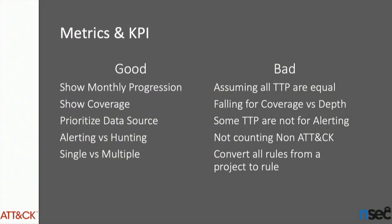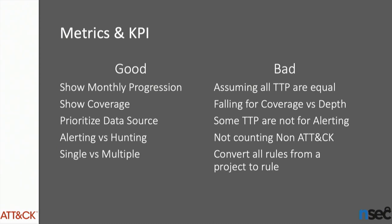Now, metrics and KPIs. If attackers think in graphs, management thinks in metrics. There are good metrics and bad metrics. Good metrics include showing monthly progression, showing your coverage, prioritizing your data source ingestion, and distinguishing alerting versus hunting. Alerting is when you send a ticket to your SOC for someone to investigate. Hunting might be a dashboard, a query you run ad hoc or on a regular basis. You might also want to represent whether you have single or multiple detections by shades of green or by a score.